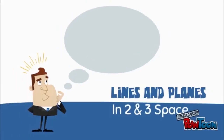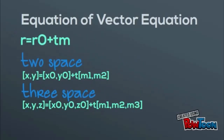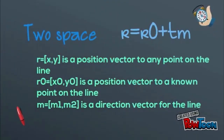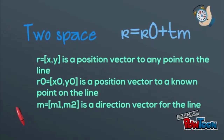We're going to cover lines in two-space and three-space. The vector equation is r equals r0 plus tm. There are two kinds of vector equations. For two-space, r equals bracket xy, which is a position vector to endpoints on the line. r0 equals bracket x0, y0, which is a position vector to known points on the line. m equals bracket m1, m2, which is a direction vector of the line.